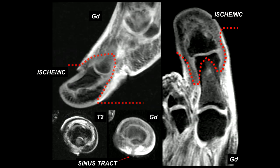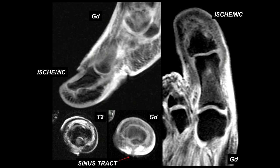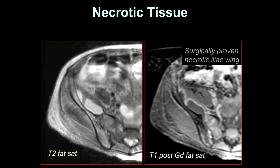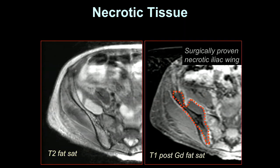Here's another example with devitalization at the great toe. We see a region of non-enhancement, and generally at the margins of the necrotic area there is a region of hyperemia with increased enhancement that helps delineate the area of necrosis. This is important for the surgeon in order to either revascularize the patient or debride that tissue. Here's a patient with an abscess at the pelvis — it's easy to see the abscess in the iliopsoas, but it's harder to see the area of necrosis unless you give contrast. T1 post-contrast shows non-enhancement involving the iliac bone, so again this is an area that will need to be debrided or revascularized.